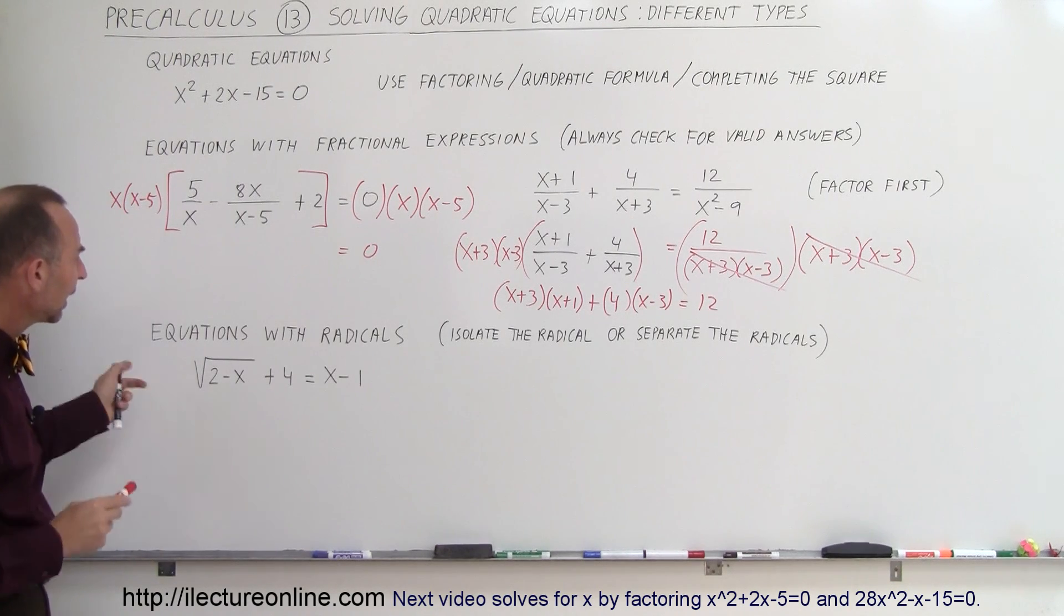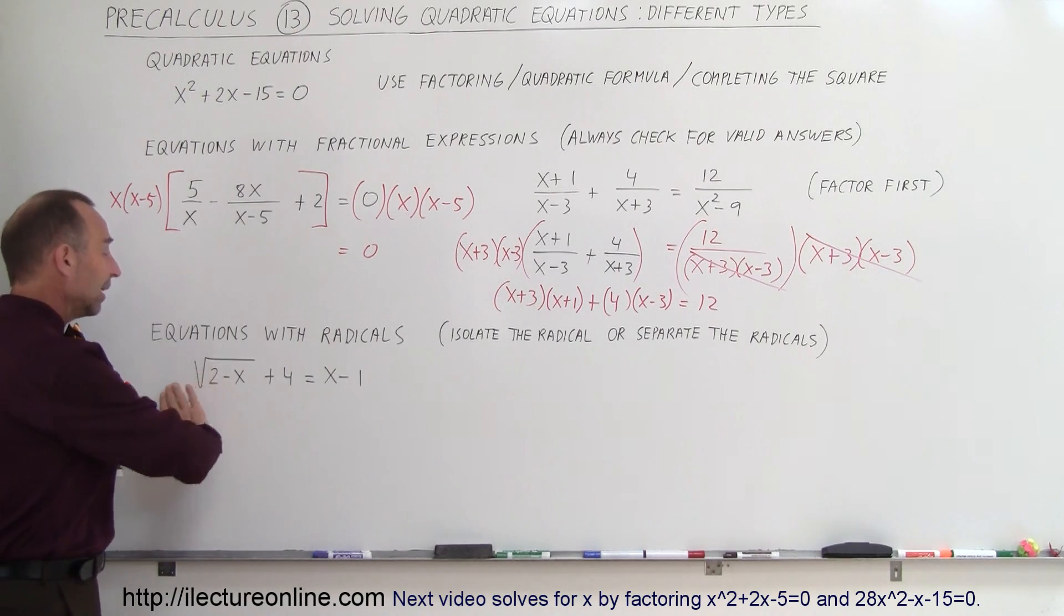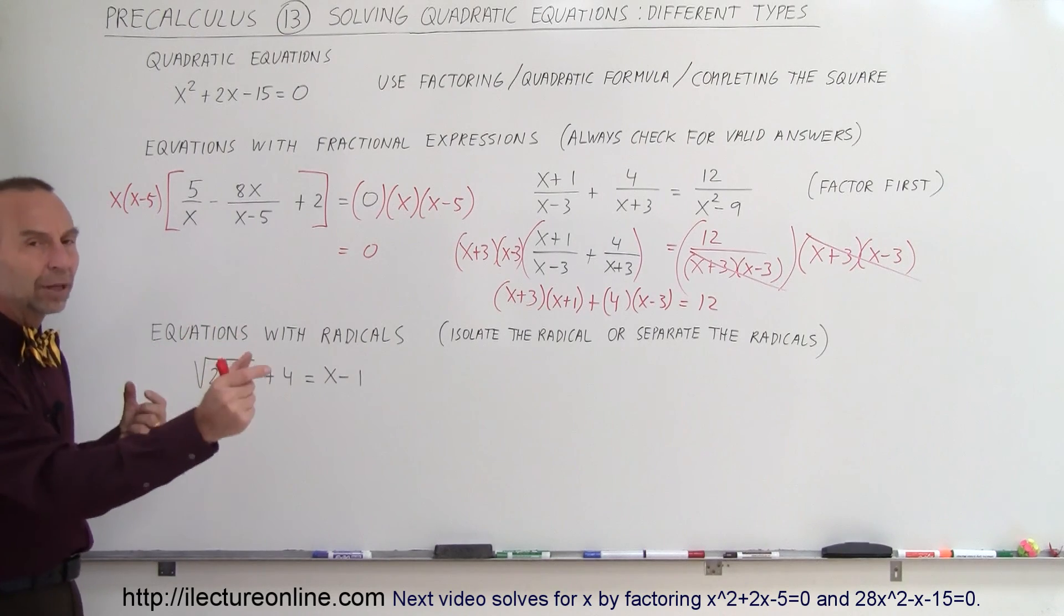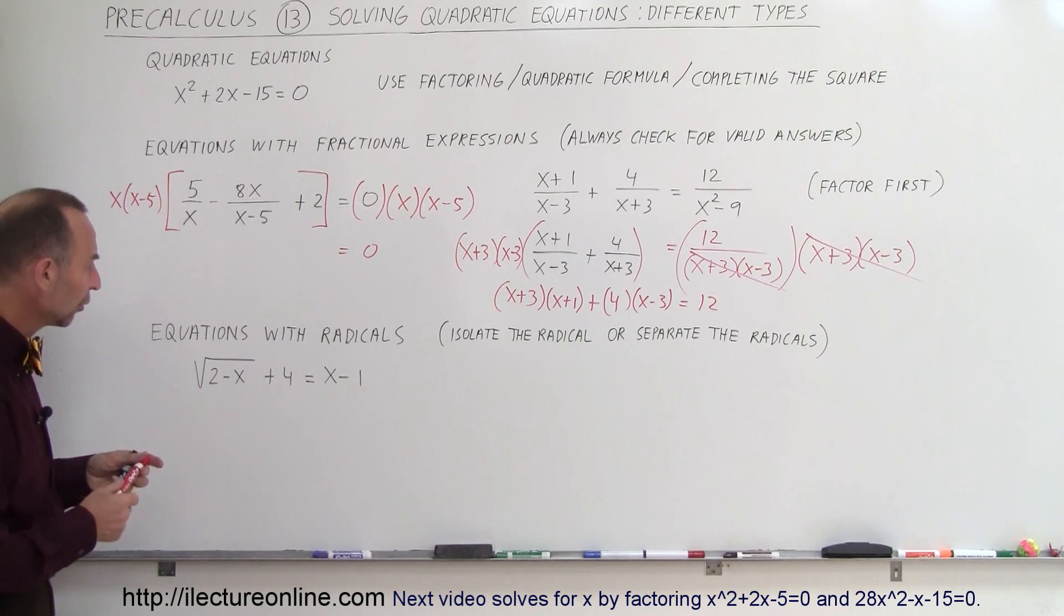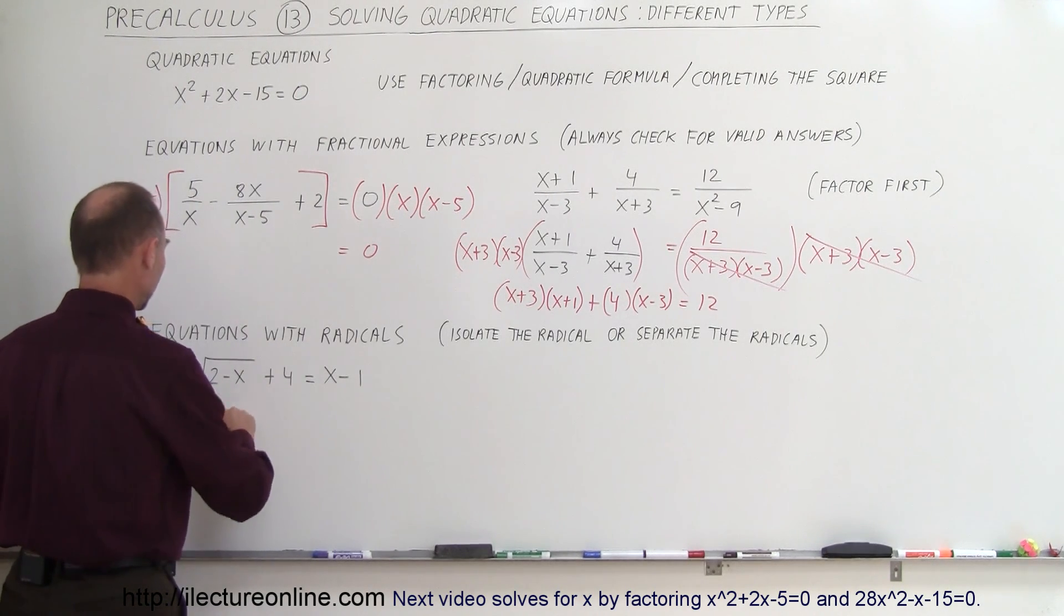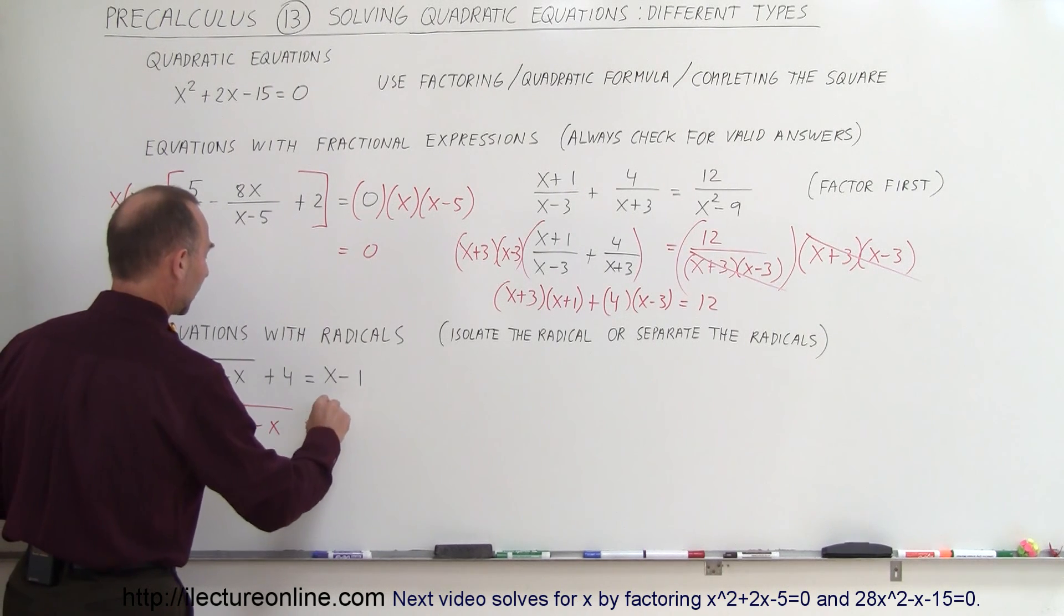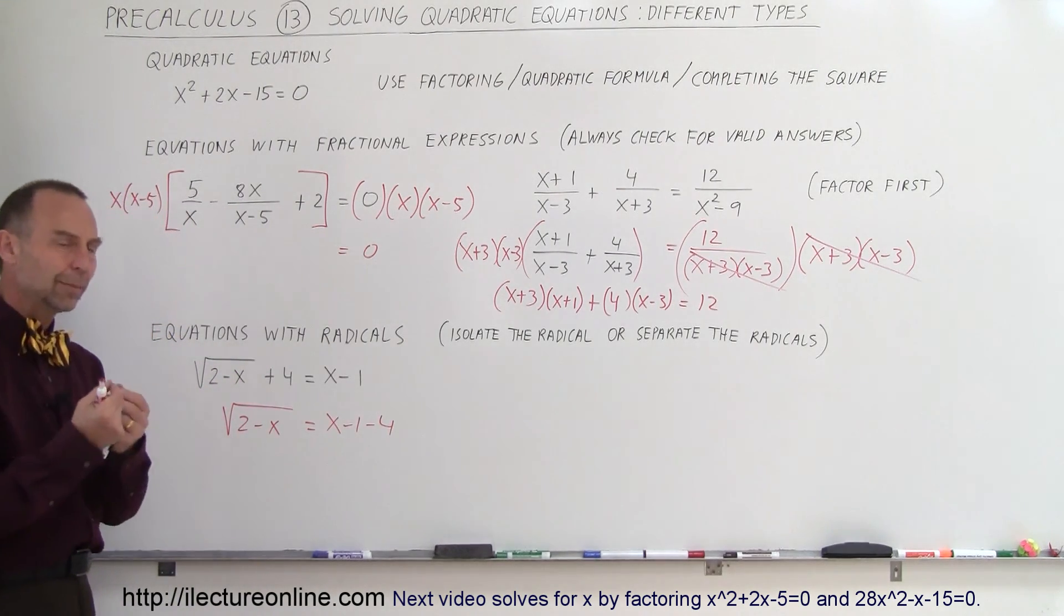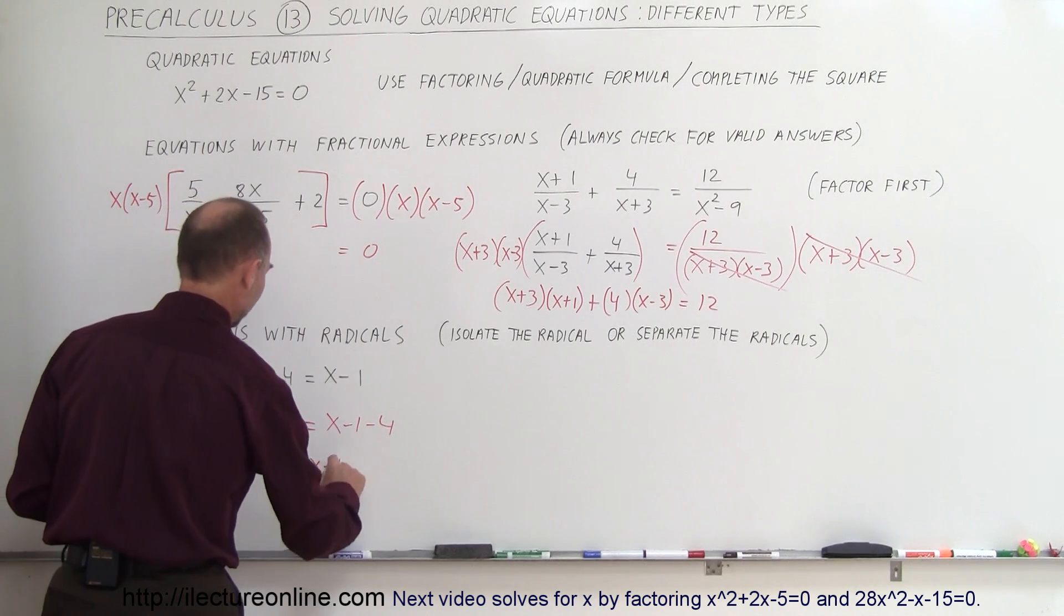Finally, when you end up with something that has radicals in it, if there's only one radical, you want to isolate this on one side and everything else to the other side. If you have two radicals in the equation, you want to separate the radicals. One on one side and one on the other side. And there's some examples for you in some later videos. But here, in this case, what you want to do is move this to the other side. So this becomes the square root of 2 minus x is equal to, that would be x minus 1 minus 4. When you move the 4 across, it becomes minus. You can combine like terms. So we have the square root of 2 minus x is equal to x minus 5.